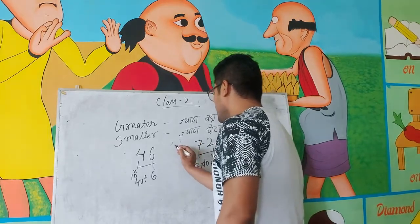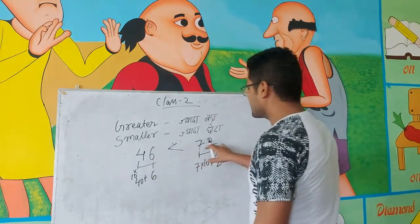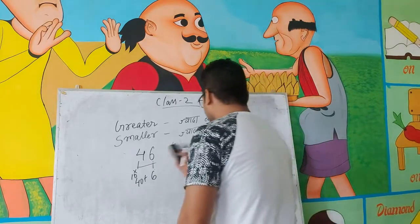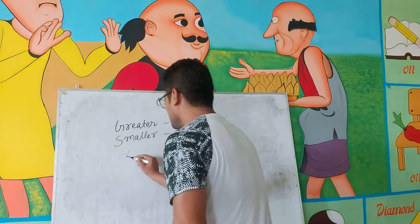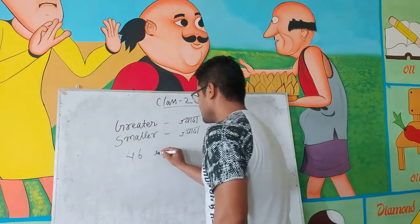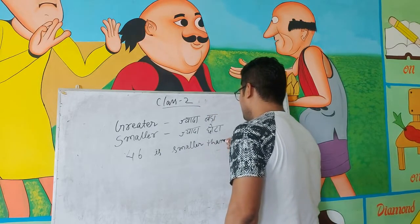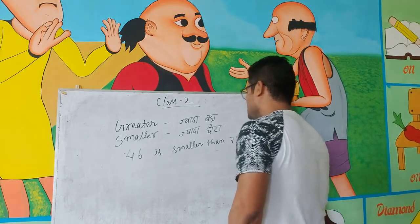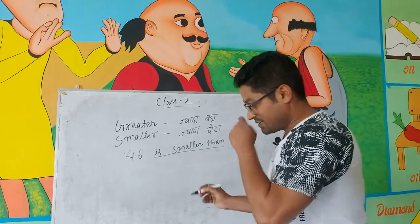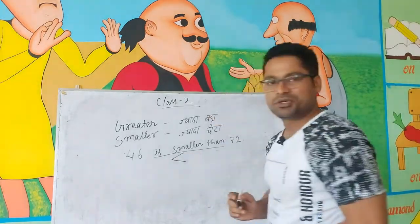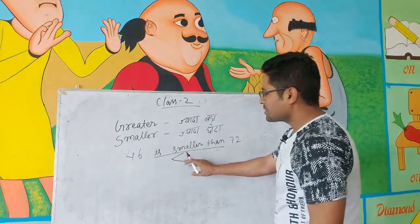इसको तुम इस तरीके से कह सकते हो — 46 जो है वो 72 से smaller है. 46 is smaller than 72. ऐसे लिखेंगे हम. Is smaller than के जगह पर कई बार इस symbol का भी use होता है. छोटे का चिन दे दो — जैसे add का चिन '+' होता है, subtract का '-' होता है.